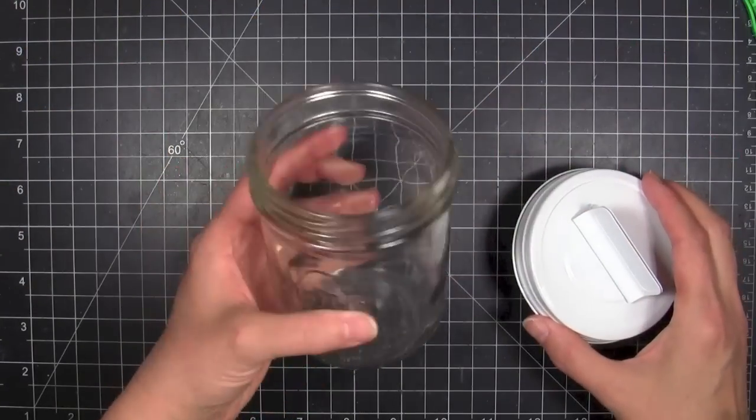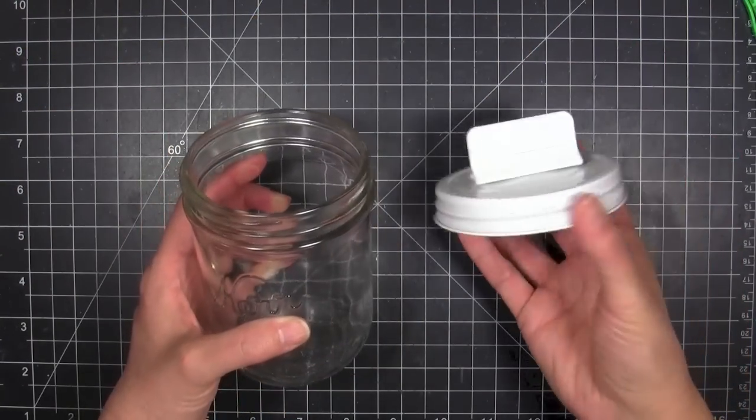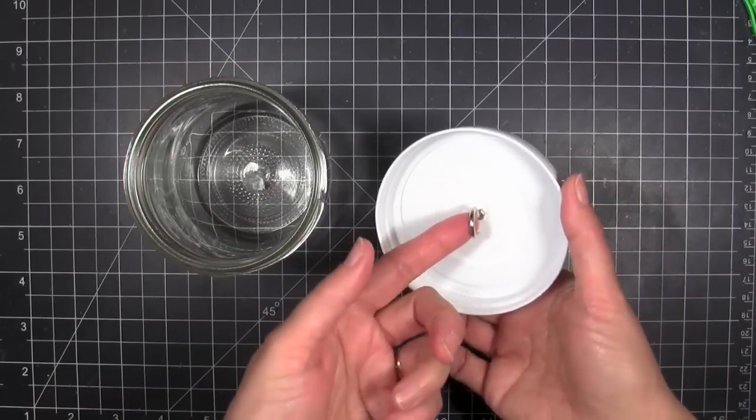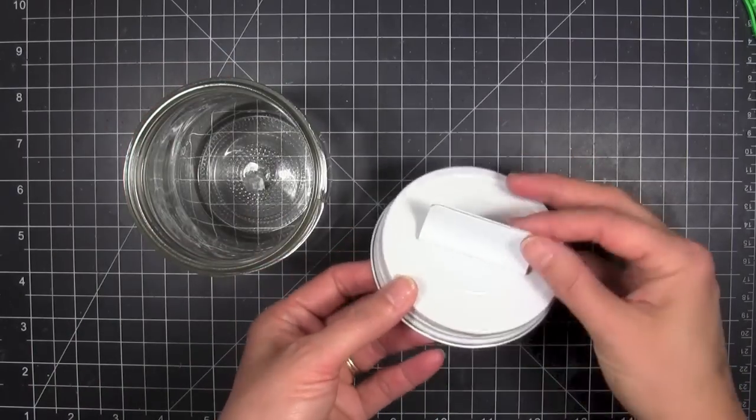It's a waterless snow globe using a canning jar and these awesome show topper lids by Cosmo Cricket. They come in different designs but they're designed to fit wide mouth canning jars and they have a hook inside.